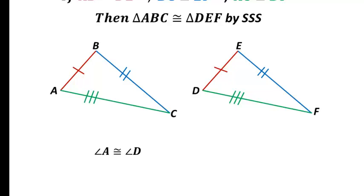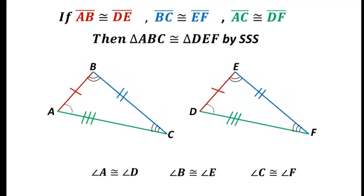So if we use side-side-side in this example here, well angle A would have to be congruent to angle D, and angle B would have to be congruent to angle E, and angle C would have to be congruent to angle F. All we needed to prove the triangles were congruent was side-side-side, but if we did prove the triangles congruent, then all the other parts that weren't part of the proof are congruent as well.